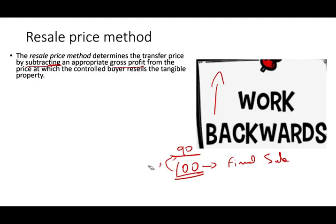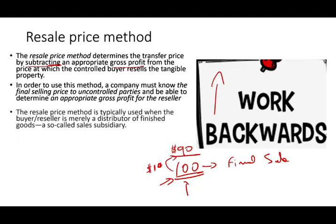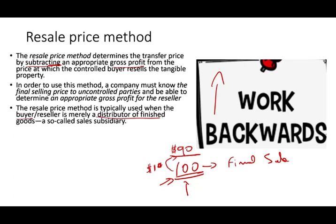So simply put, we find the final sale price, we find the gross margin, and we subtract the gross margin for that seller — that gives us our transfer price. In order to use this method, the company must know the final selling price to the uncontrolled parties and be able to determine an appropriate gross margin for the reseller. The resale price method is typically used when the buyer or reseller is merely a distributor of the finished goods — a so-called sales subsidiary.